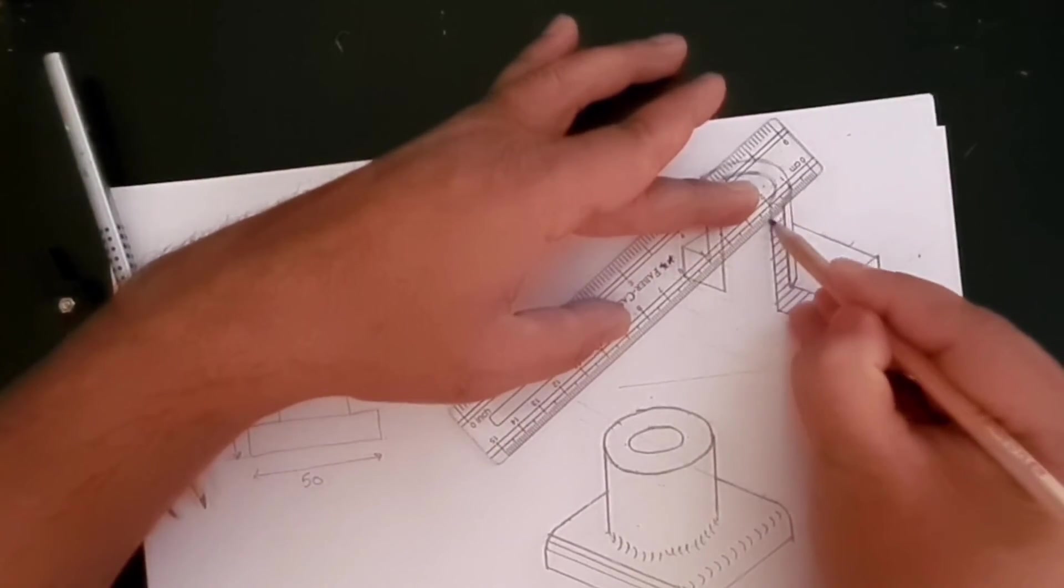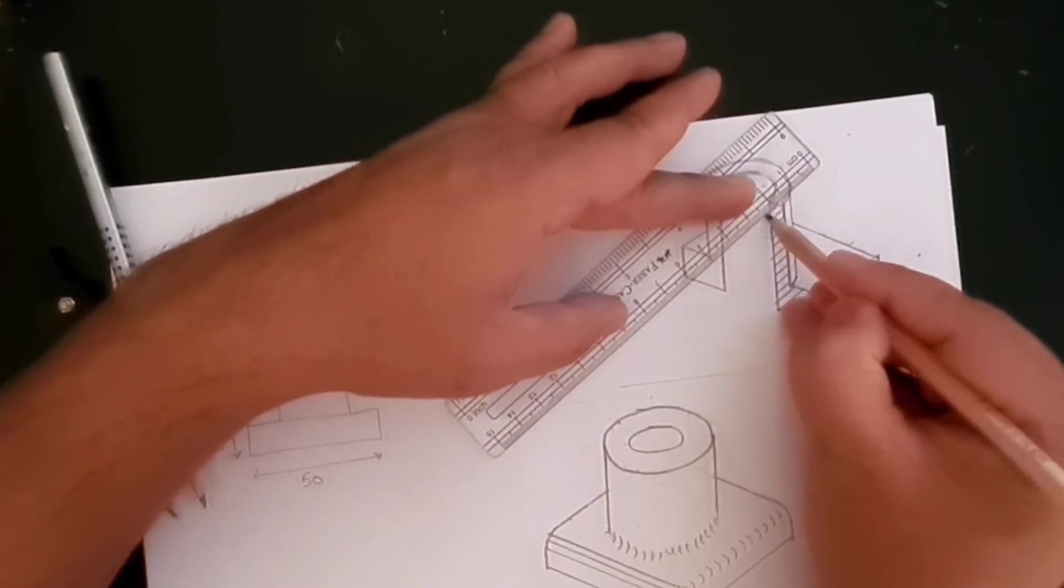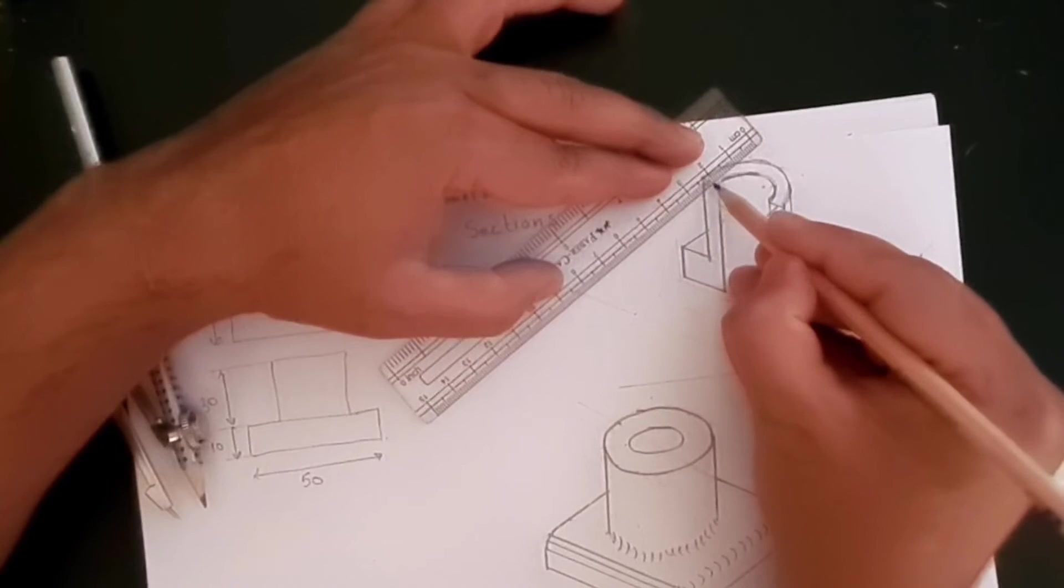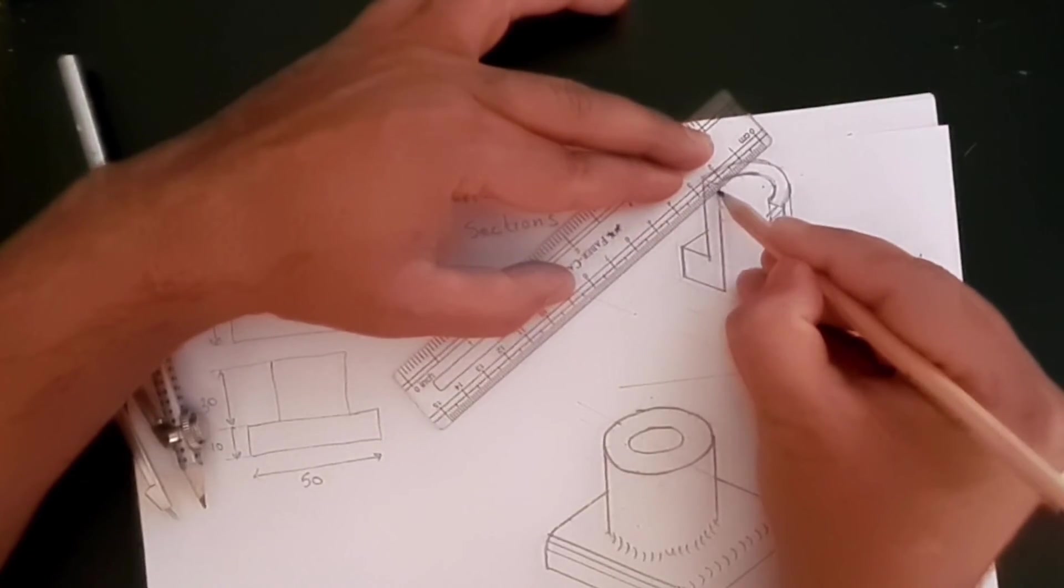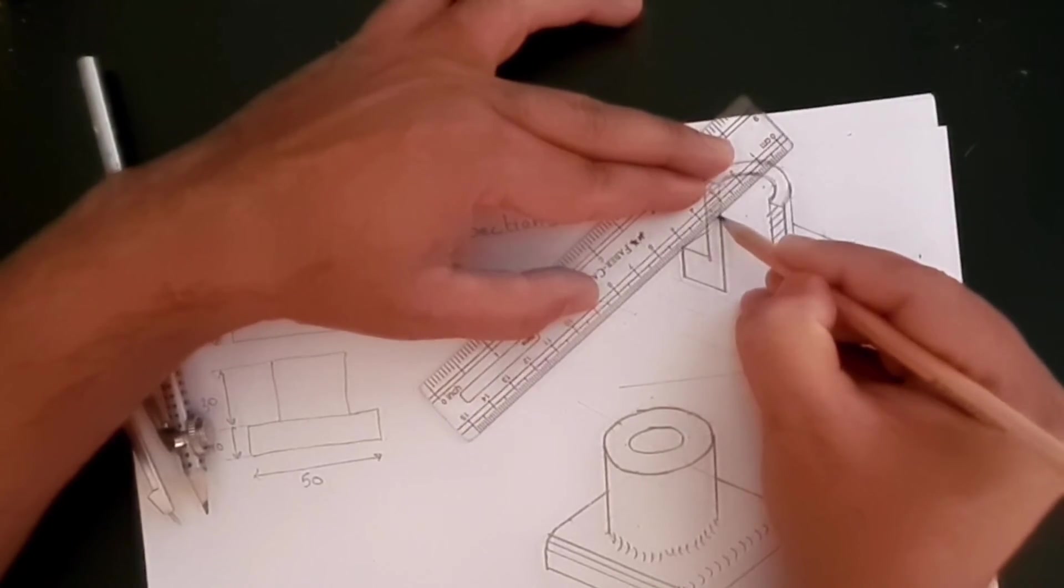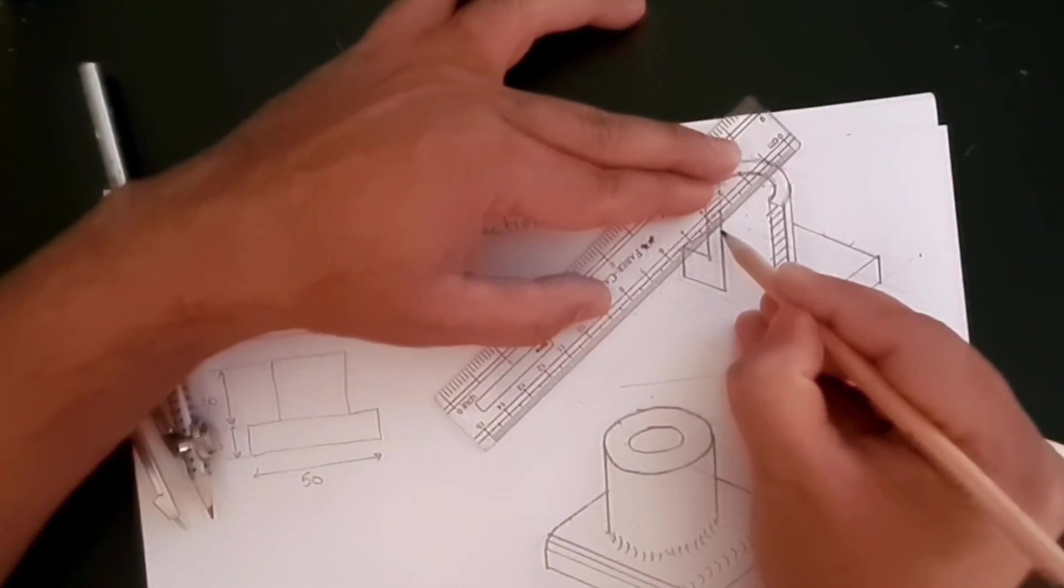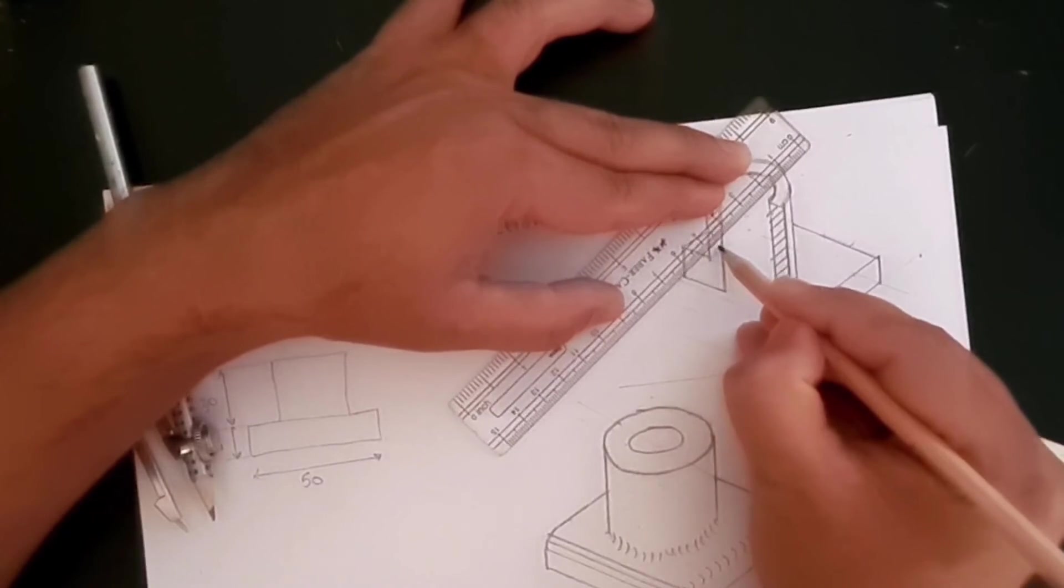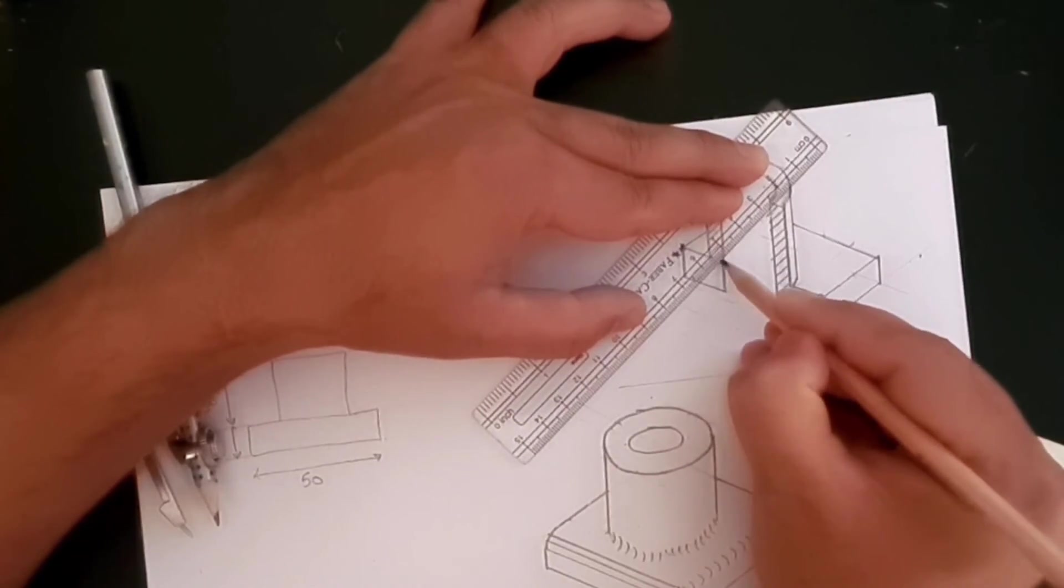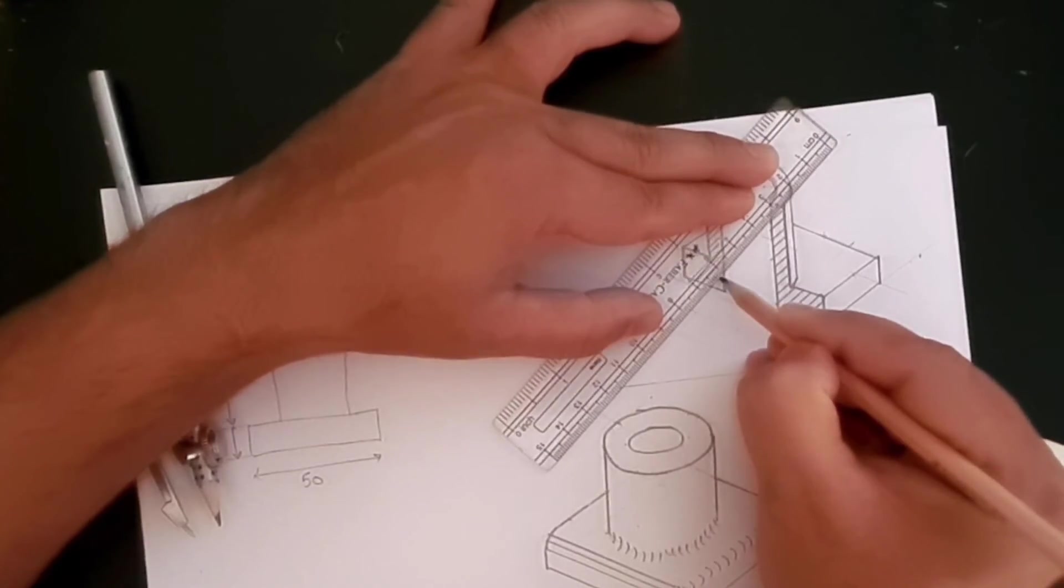Now again, if you are confident enough, you can do this cross sectioning by hand as well. It's entirely up to you. Without using the scale, it might be a bit faster. You might not get the same finish, but that's all right, as long as you know what results you are after. That's fine.